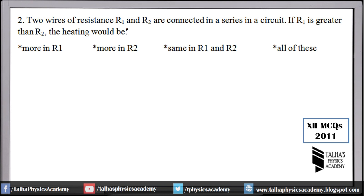Number 2: two wires, one has resistance R1 and the other R2, both connected in series. If R1 is greater than R2, in which wire would heating be more? The answer is: heating would be more in R1. Since both are connected in series, we use the formula for power which is P = I²R.